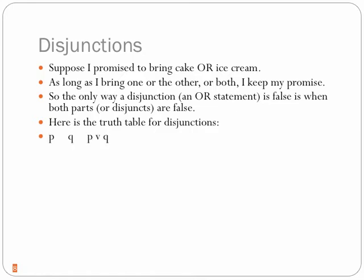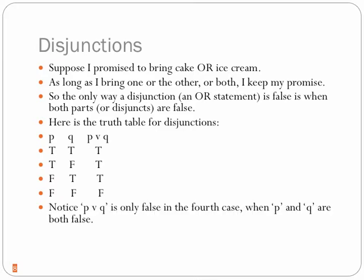Looking at the truth table for P or Q: if I bring both cake and ice cream, I kept my promise — true. If I bring only cake, I still kept my promise — true. If I bring only ice cream, P is false but Q is true, and P or Q still holds — true. Only in the last case where I bring neither is P or Q false. So P or Q is only false in the fourth case, when P and Q are both false.